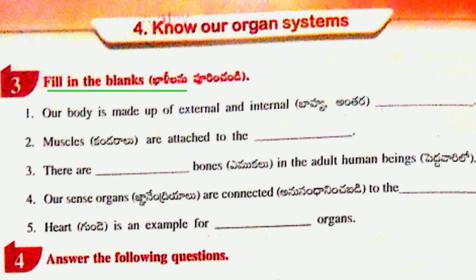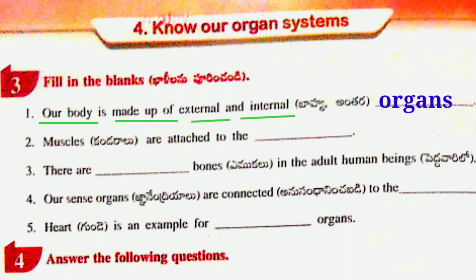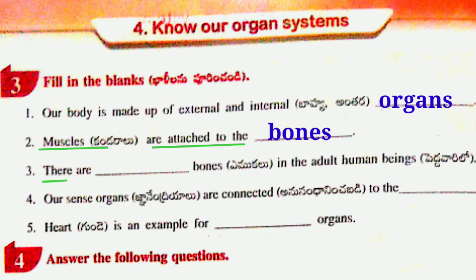Fill in the blanks. First: Our body is made up of external and internal Organs. Second: Muscles are attached to the Bones. Third: There are 206 bones in adult human beings.